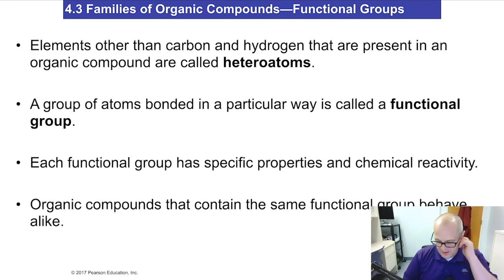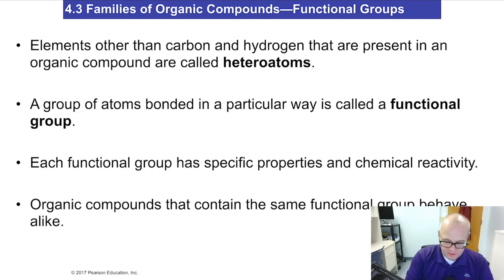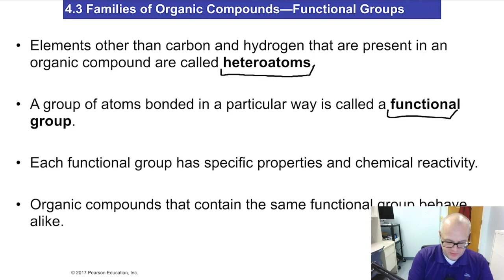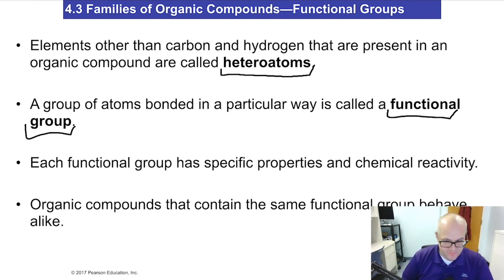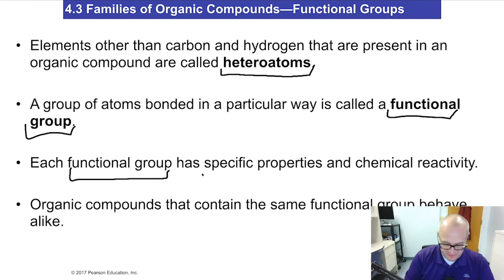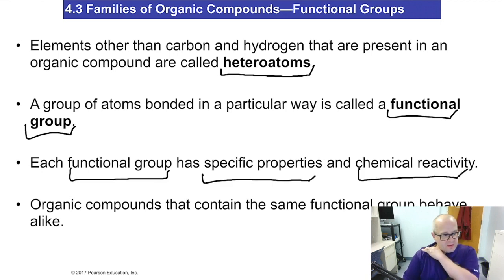Organic molecules can have other atoms in them besides carbon and hydrogen, and those other atoms are called heteroatoms. A group of atoms arranged in a particular way is called a functional group, so heteroatoms can make functional groups. Each functional group has specific properties and predictable chemical reactivity.